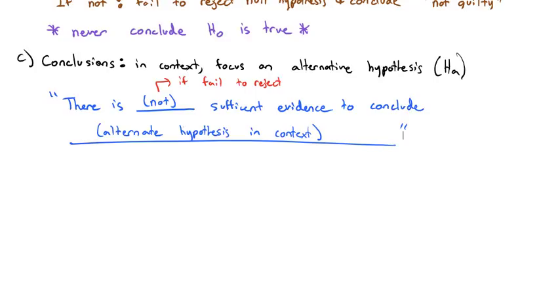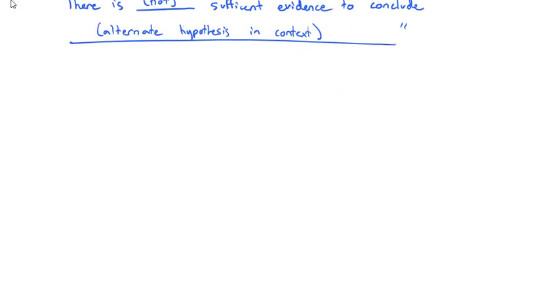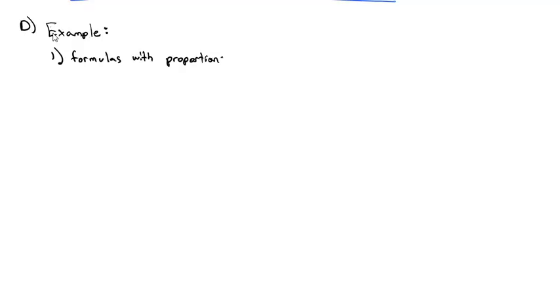Let's do two examples where we can see what hypothesis testing looks like. For doing hypothesis tests specifically with proportions, everything we've done so far actually applies to all hypothesis testing, but with proportions there are a few specific formulas we need. We know that proportions are normally distributed with the proportion acting as the mean, and the square root of pq over n acting as the standard error.